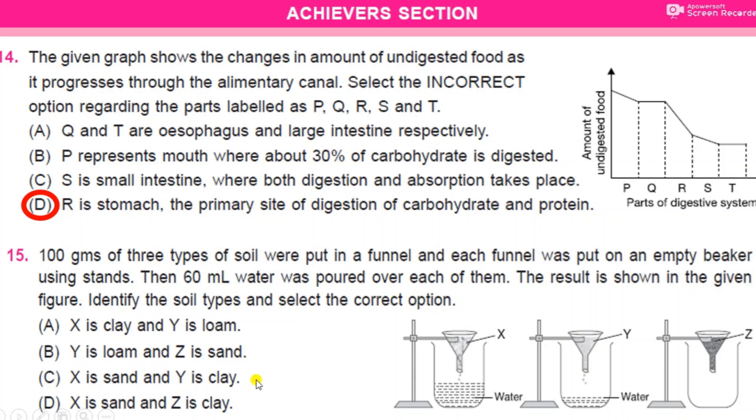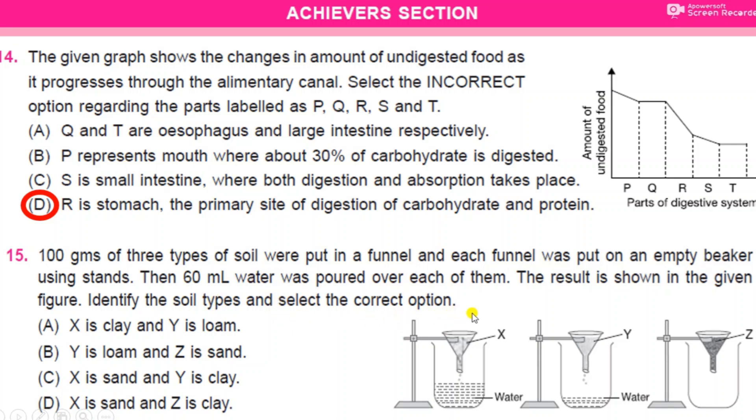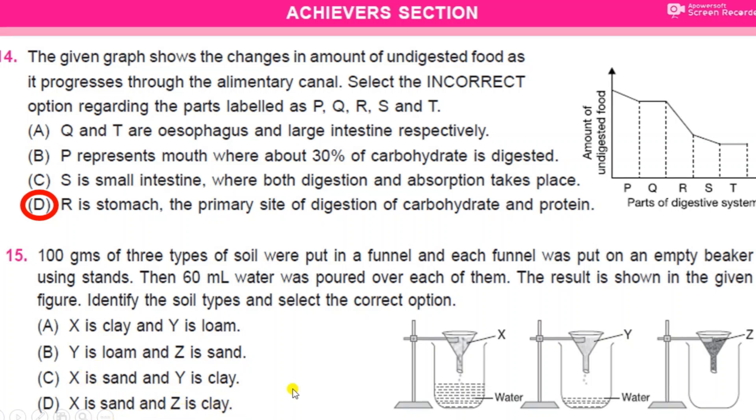Last question: 100 grams of three types of soil were put in a funnel, and each funnel was put on an empty beaker using stands. Then 60 ml water was poured over each of them. The result is shown in the given figure. Identify the soil types and select the correct option. Look at the figure given here: X, Y, and Z. Option A: X is clay and Y is loam. Option B: Y is loam and Z is sand. Option C: X is sand and Y is clay. Option D: X is sand and Z is clay. And the correct answer is D, X is sand and Z is clay.